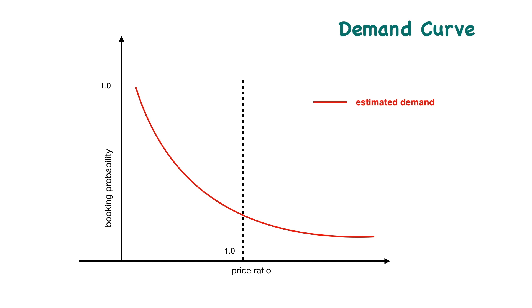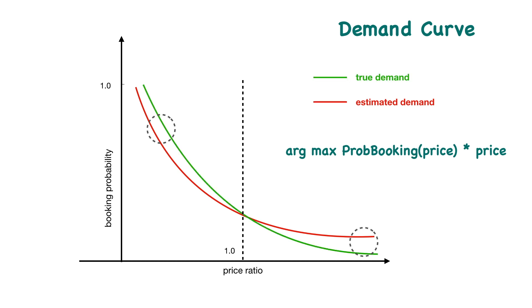The booking probability model can be used to derive a demand curve, which tells how booking probability can change with price. If the estimation is accurate, a naive pricing strategy that maximizes the expected revenue based on the estimation may work well. However, in practice, the estimation may not be accurate. Often times, it's very hard to get the curve right around the price points that are far away from the base price set by the host. Therefore, this naive pricing strategy may not work.